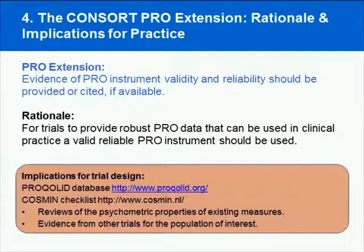The next extension is that the evidence of PRO instrument validity and reliability should be provided or cited if available. We know that there are over 800 different patient-reported outcome measures available for use within trials. In a cancer setting, the FACT questionnaires or the EORTC questionnaires are often used. But whatever questionnaire is chosen must be appropriate for the population in the study, with a clear rationale for its use, and valid and reliable in the population of interest and for the language in which it's being used. If it's an electronic PRO, it must also be valid and reliable in that format.